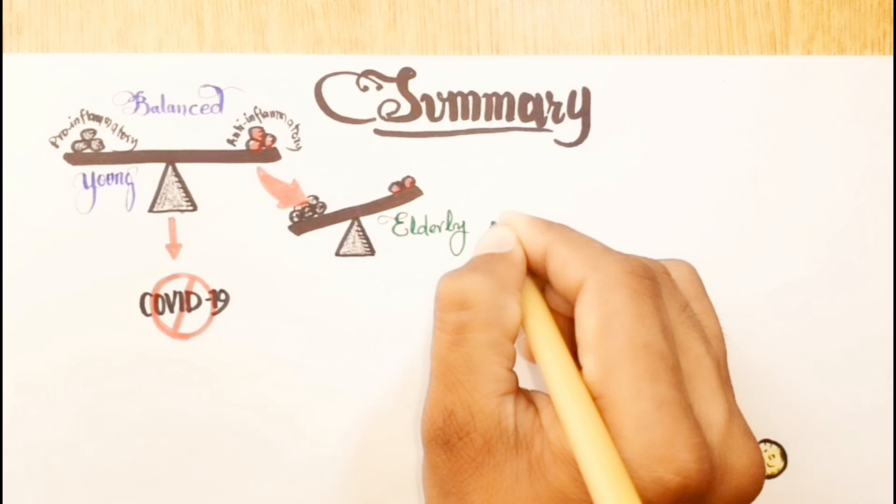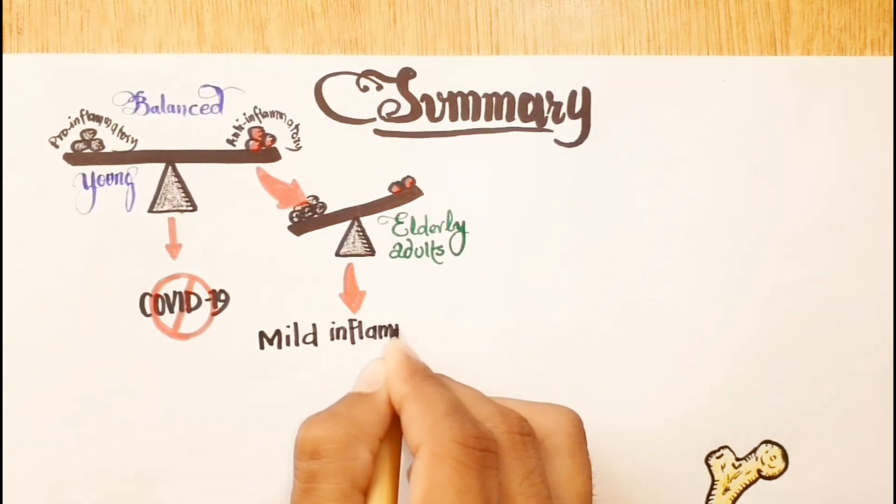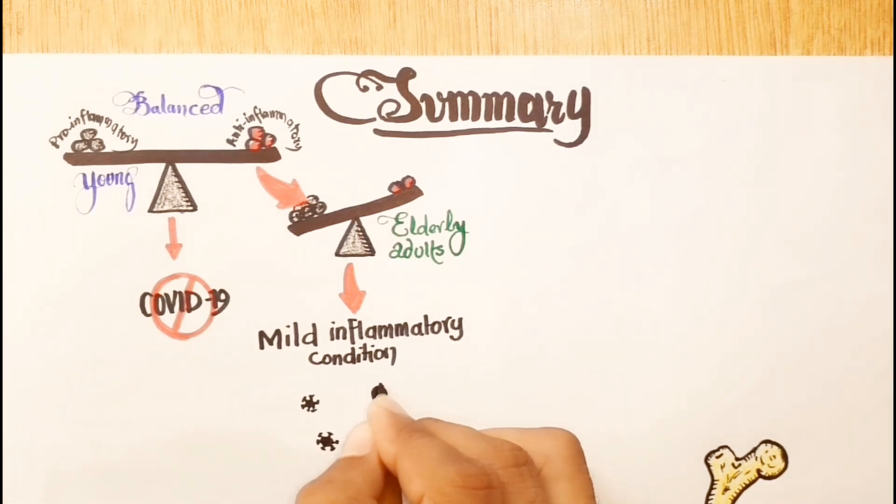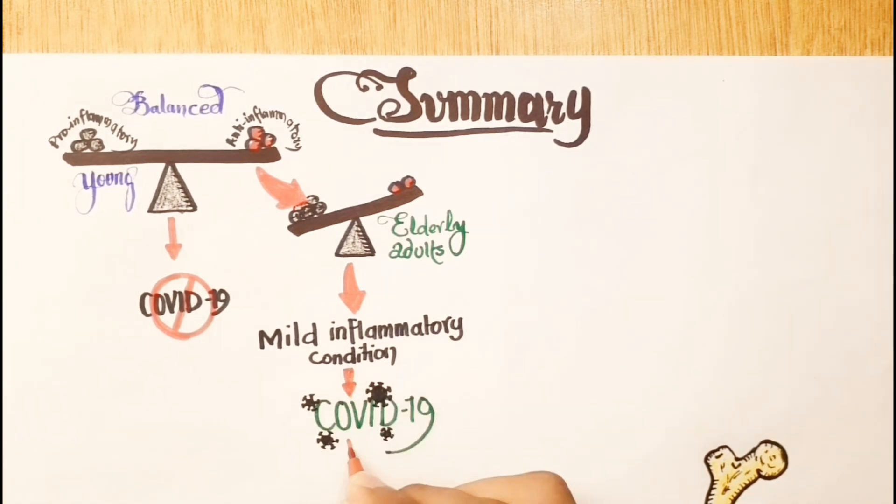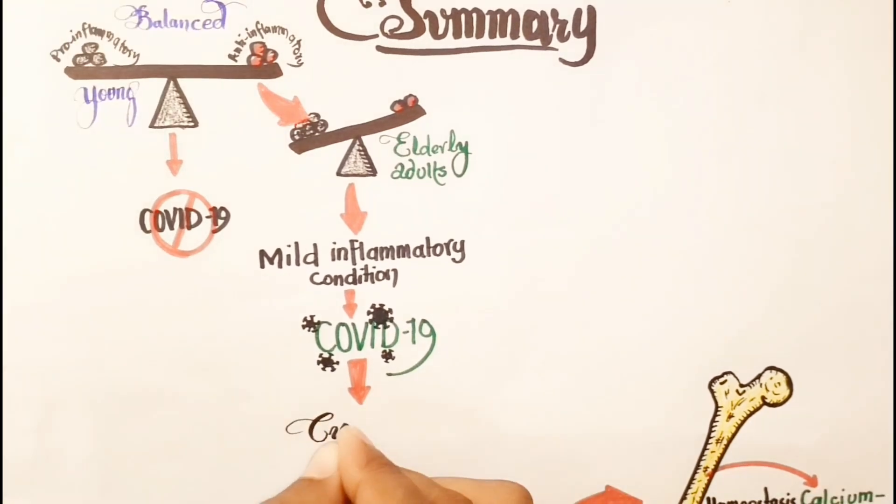As discussed in the other two videos uploaded earlier, with advancing age the immune system maintains a condition of mild inflammation. So the activation of the body with pathogens such as COVID-19 infection can exaggeratedly increase the amplitude of the immune response, which is known as a cytokine storm.